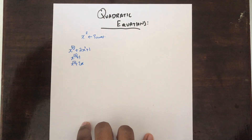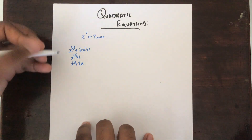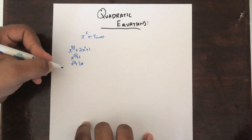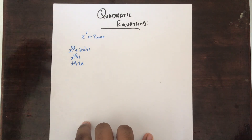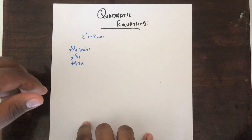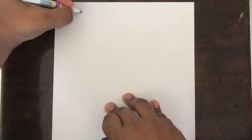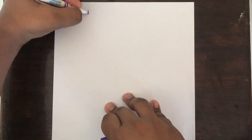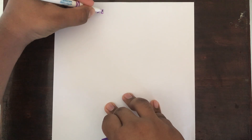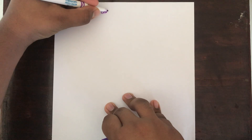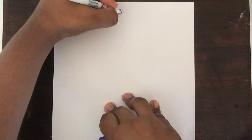Now we may also be asked to solve quadratic equations. There are actually 3 methods you can use to solve a quadratic equation. The first one is the trial and error method, which can also be called factorization.